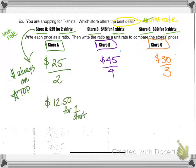So for store A, what I'm going to do is I'm going to divide in my calculator. I'm just going to take 25 divided by two. And when I do that, I get $12.50. So that means it's $12.50 per shirt.